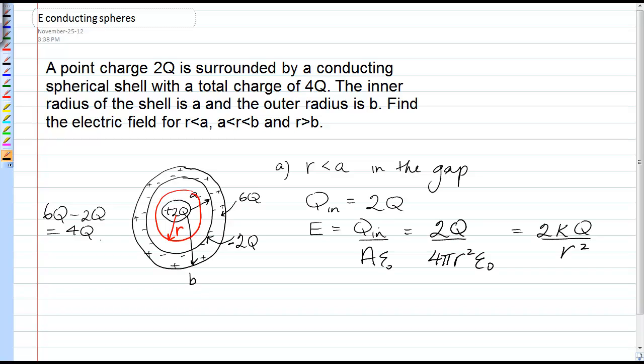So now when we go to do the electric field inside the conductor, that would be for r between a and b. This is inside the conductor. We draw our Gaussian surface inside the conductor. The radius is still r.